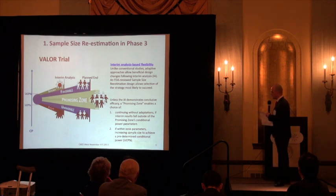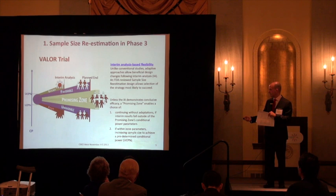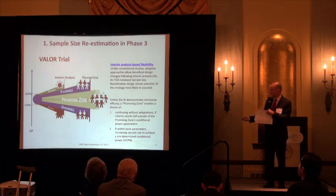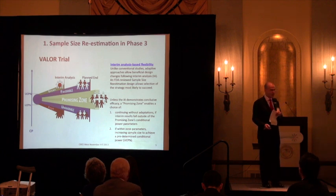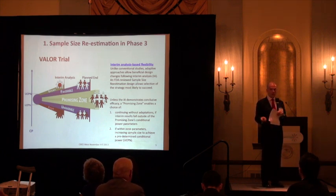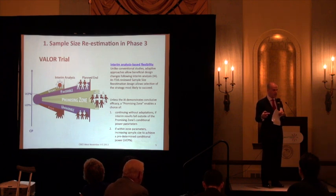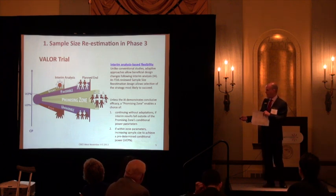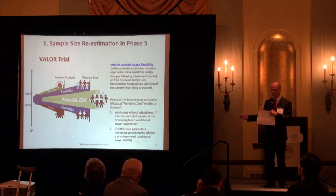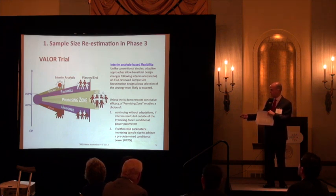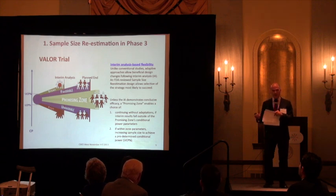The original sample size was 450 patients. The way it worked is we had an independent DSMB with an independent statistical provider, which was Cytel. They presented to the DSMB the data after 50% of the original number of events, and that was the interim analysis.